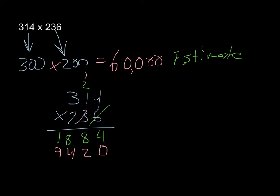And our final row. Remember, 2 zeros. 2 times 4 is 8. 2 times 1 is 2. 2 times 3 is 6. And we add it all together.